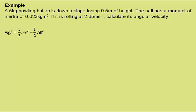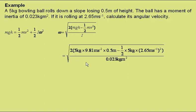For this, we can use the idea that the gravitational potential energy lost will have become linear kinetic energy and rotational kinetic energy. We can rearrange for omega, and then adding the values gives an angular velocity of 24.6 radians per second.